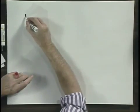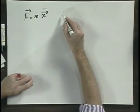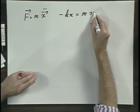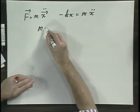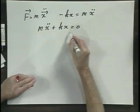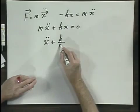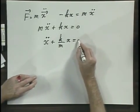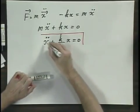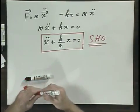I can now rewrite F equals m x double dot simply as minus kx equals m x double dot. I get m x double dot plus kx equals zero. Dividing by m, I get the famous relation: x double dot plus k over m times x equals zero. This means immediately when you see this — this is a simple harmonic oscillation.